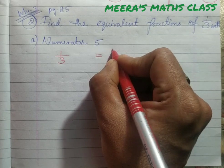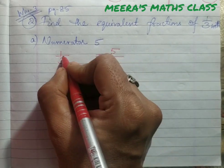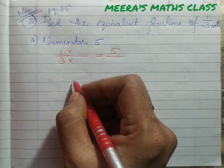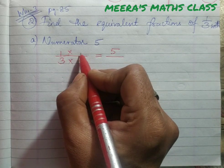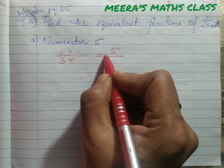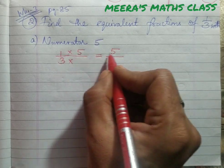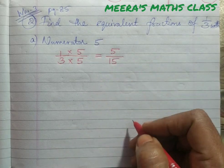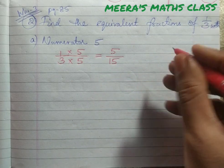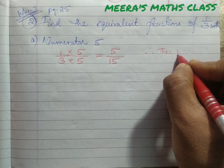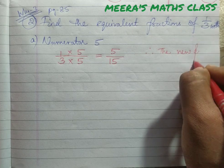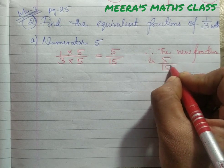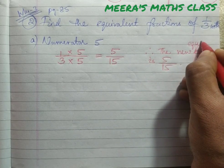So if the numerator is 5, what is the equivalent fraction for 1 by 3? We can multiply to find out. What do we multiply the numerator by to get 5? Multiply by 5: 1 times 5 is 5. The same we multiply to the denominator: 3 times 5 is 15. Therefore, the new equivalent fraction is 5 by 15.